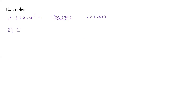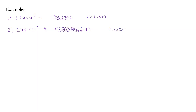What if we had 2.49 times 10 to the minus 9? We write a bunch of zeros in the front, then our 2.49, and move left nine spaces: 1, 2, 3, 4, 5, 6, 7, 8, 9. So our answer is 0.00000000249 — that's eight zeros before the 2, 4, 9.